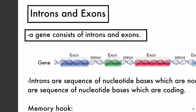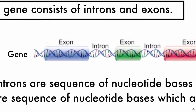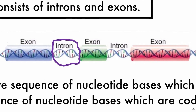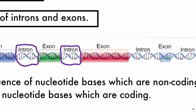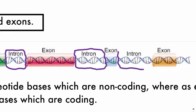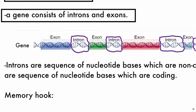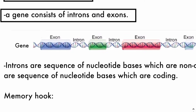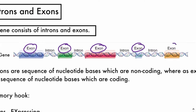The gene we were talking about contains introns and exons. Introns are the sequence of nucleotide bases on a gene which are non-coding — they do not code for any protein, so these are non-coding segments of the gene. Exons, on the other hand, are the sequences of nucleotide bases which actually code for the protein. For the messenger RNA to be translated, it should only contain exons and not introns.